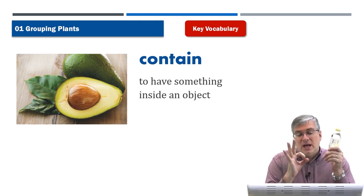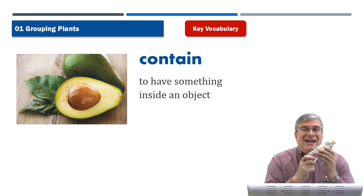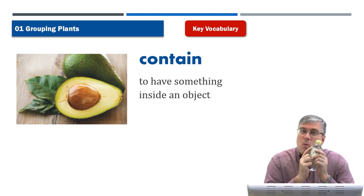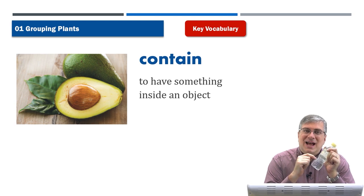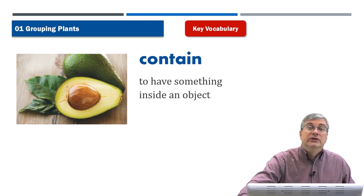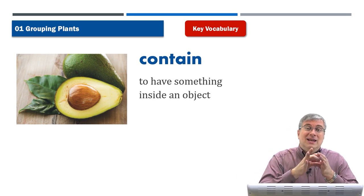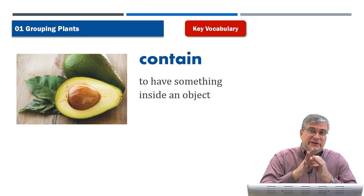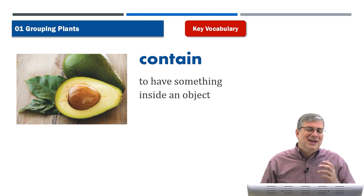'Contain' means to have something inside an object. For example, there is a seed inside an avocado. Or think of a plastic water bottle — what's inside it? Water. So the plastic bottle contains water. An avocado contains a big avocado seed. Avocados are great for making guacamole, by the way.